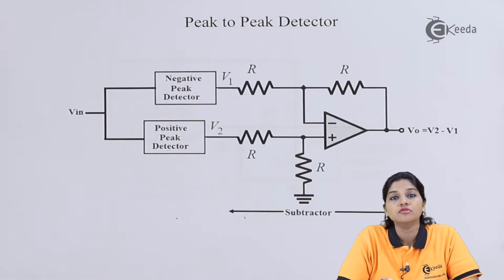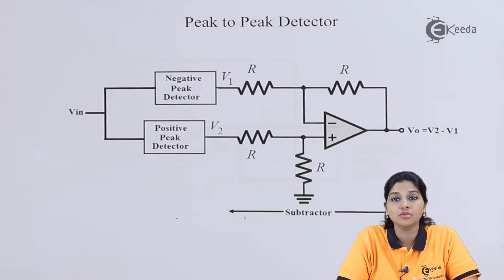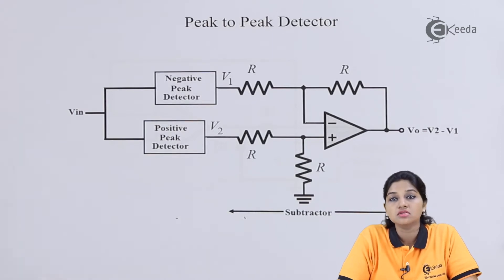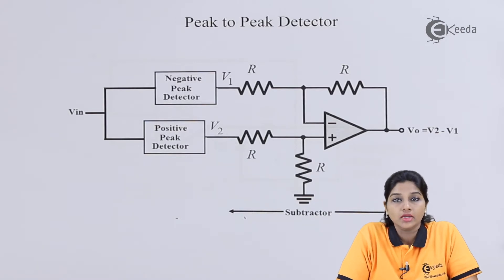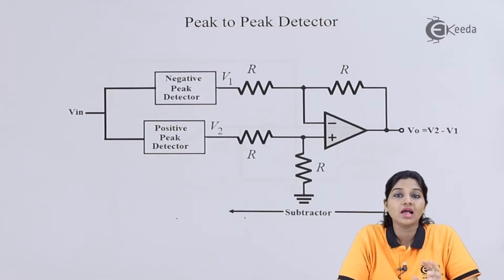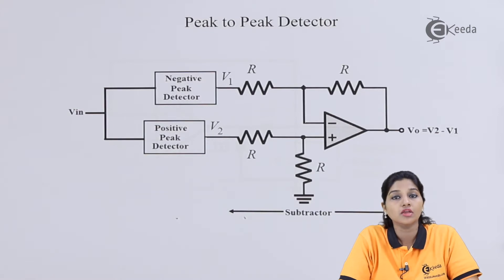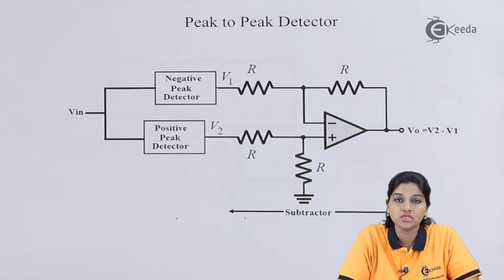The positive peak detector circuit is basically used to detect the positive peak value of the input signal. The output of the op-amp is given to diodes D1 and D2. Diode D1 will conduct only during the positive half cycle, meaning the circuit is sensitive only during the positive half cycle. Both diodes are assumed to be ideal, so diode D2 will clamp the output voltage to 0V ideally, or to minus 0.7V in a practical application.